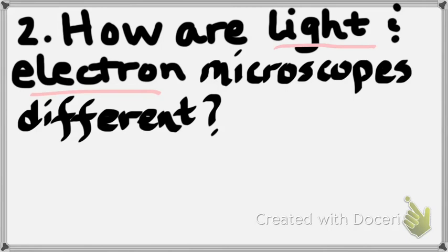Obviously the source of energy is different. Light microscopes use light; electron microscopes use electrons. Electron microscopes have higher magnifications because electrons don't scatter — light scatters and goes all different directions, but electron beams stay straight. So you get better images and higher magnifications. That's basically the difference you need to know.